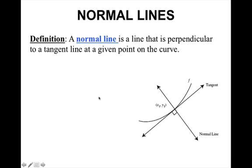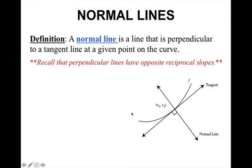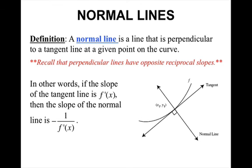Normal lines. A normal line is a line that is perpendicular to a tangent line at a given point on the curve. So the normal line is perpendicular to the tangent line at that same point of tangency. Recall from algebra that perpendicular lines have opposite reciprocal slopes. So if the slope of the tangent line is f prime, then the slope of the normal line is negative 1 over f prime.